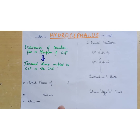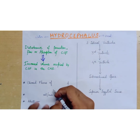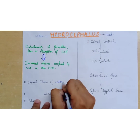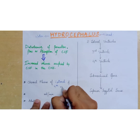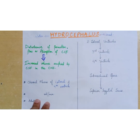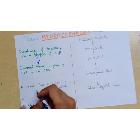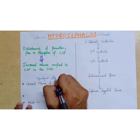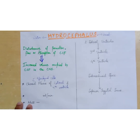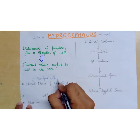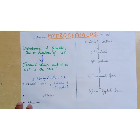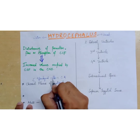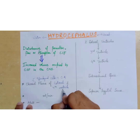Before moving further on hydrocephalus, we should have an idea about the cerebrospinal fluid and its anatomy along with its circulation. CSF is formed in the choroid plexus of the lateral and fourth ventricles — precisely in the ependymal cells of the choroid plexus. The process of formation of CSF is an active process supported by the enzyme carbonic anhydrase.